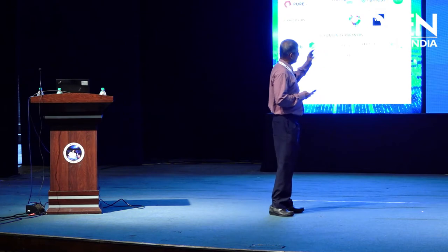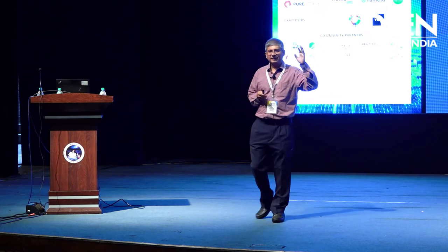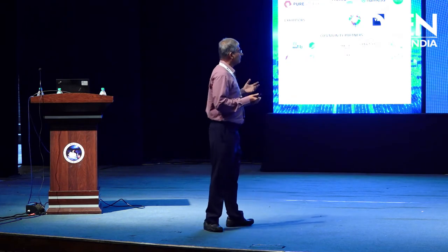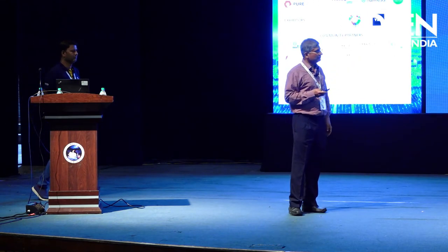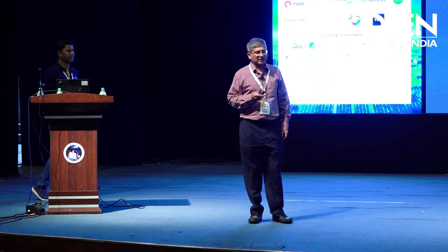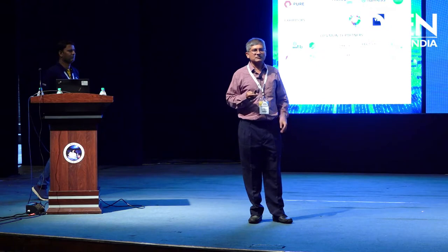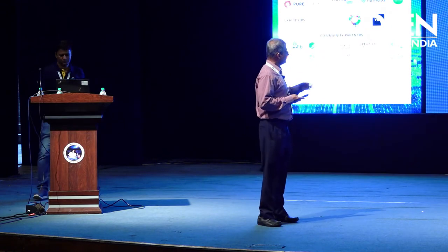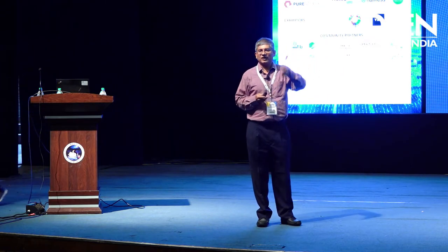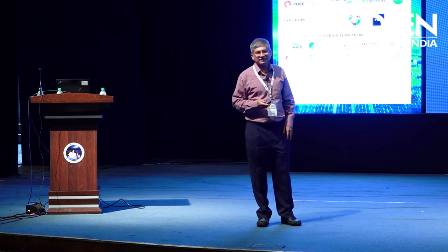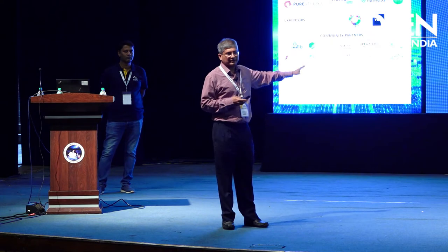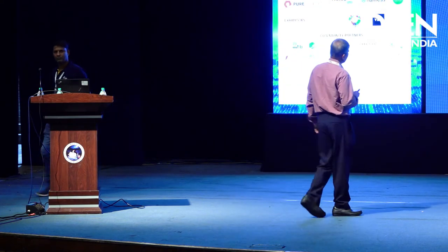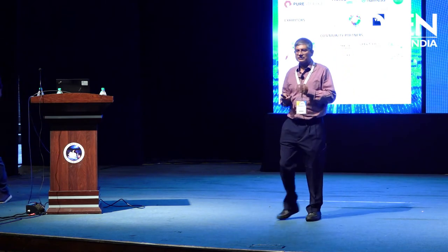In open source, we have a similar setup - a community, maybe an organization - but what we develop is finally open and available: the source code. That is the simplest way of looking at it - probably the purest form of an open source product - where we have the code available for modification, redistribution, and whatever you want to do with it. It's publicly accessible. There are a lot of nuances, but in a simple way, this is the basic understanding of what open source is.